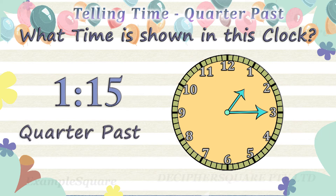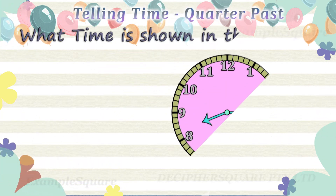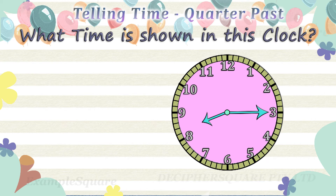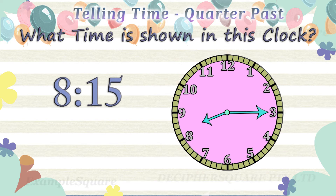15 minutes is quarter of an hour, so the time is quarter past 1. What time is shown in this clock? The hour hand is pointing in between 8 and 9, so the time is 8 hours and some minutes. The minute hand is pointing at 3, referring to 15 minutes. The time is 8:15, that is 15 minutes past 8. 15 minutes is quarter of an hour, so the time is quarter past 8.